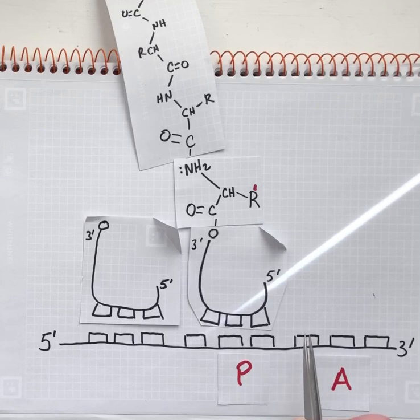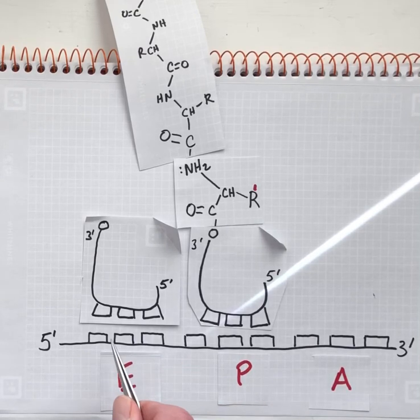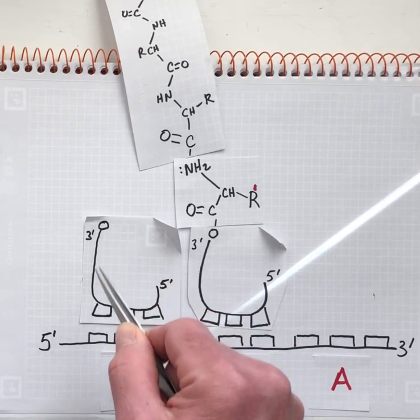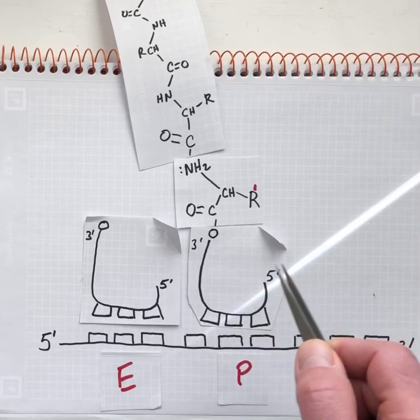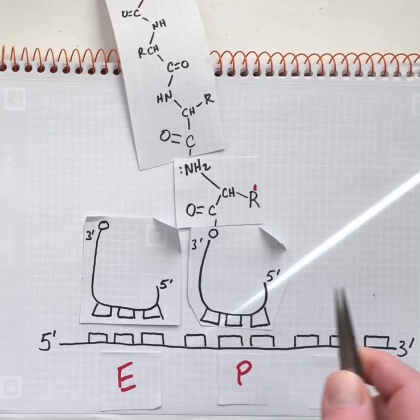Now we refer to this third site as the E-site, for exit site. It's occupied by the tRNA that was the leaving group in that peptidyl transfer reaction.